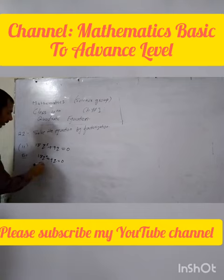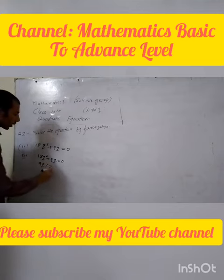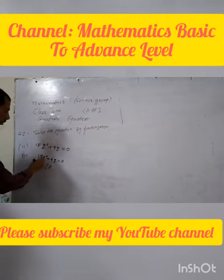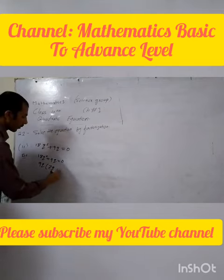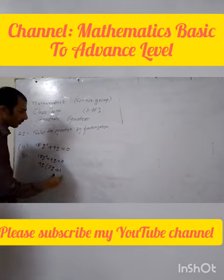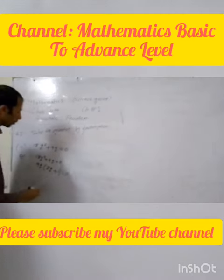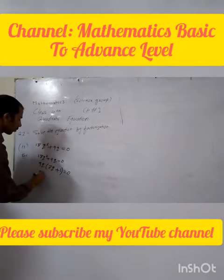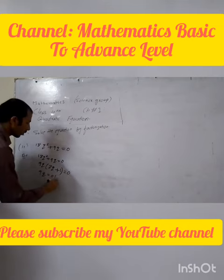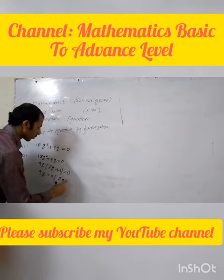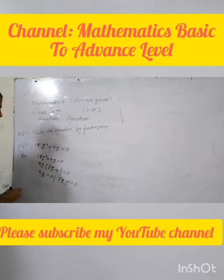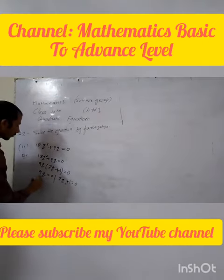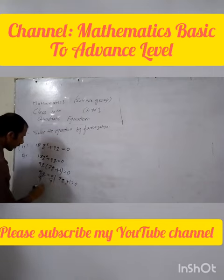Factor out 9q. We get 9q times 2q plus 1 equals 0. Setting 9q equal to 0, q equals 0.